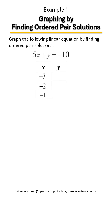We're going to graph a line by finding ordered pair solutions. To find ordered pair solutions, you plug in values for X or Y. For this example, I chose to plug in values for X. In the table, we're going to let X be negative 3, then negative 2, and then negative 1, to see what we get out for Y each time.